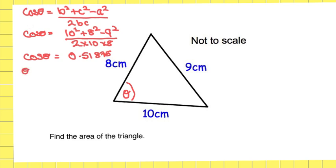So theta is equal to cos to the minus 1 of 0.51875. Theta is equal to 58.8 degrees.